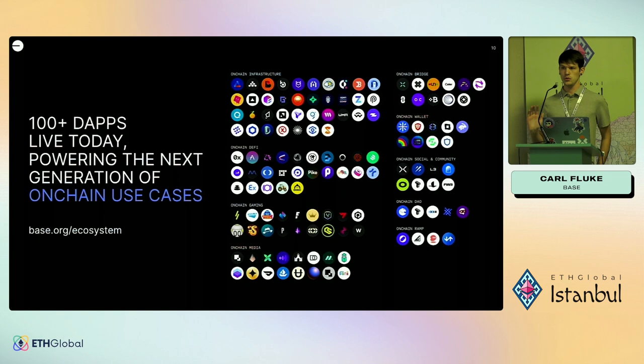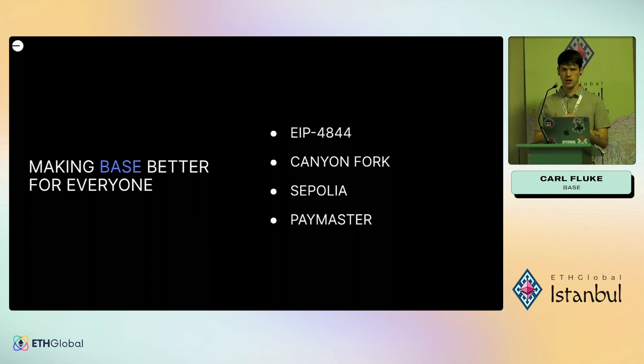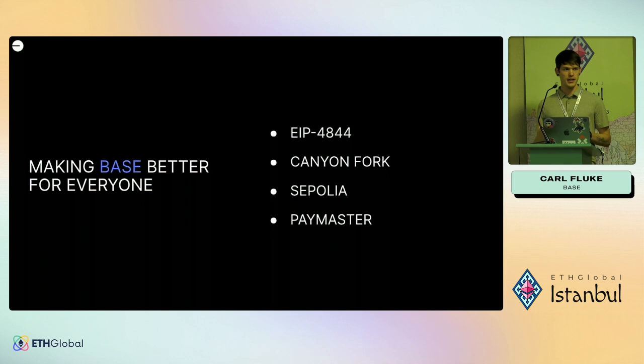We've been live since August and there are a ton of apps. We're a core contributor with Optimism. The Canyon update, which we just launched on Tuesday on testnet — Coinbase made half of it — brings it up to Shanghai and Capella, so you can use the newest Solidity features on Base. We also launched the Polia testnet since Göerli is going away in January. And relevant to this talk, we launched a paymaster on testnet — we want to move away from the faucet world and instead control things through a combination of paymaster and attestations.